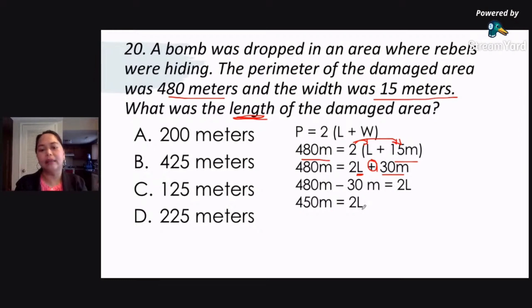So again, so that we can get the length or L, we need to divide both sides by 2. So we divide both sides by 2. That would give us L equals 450 meters divided by 2, which gives us the correct answer which is letter D, 225 meters.